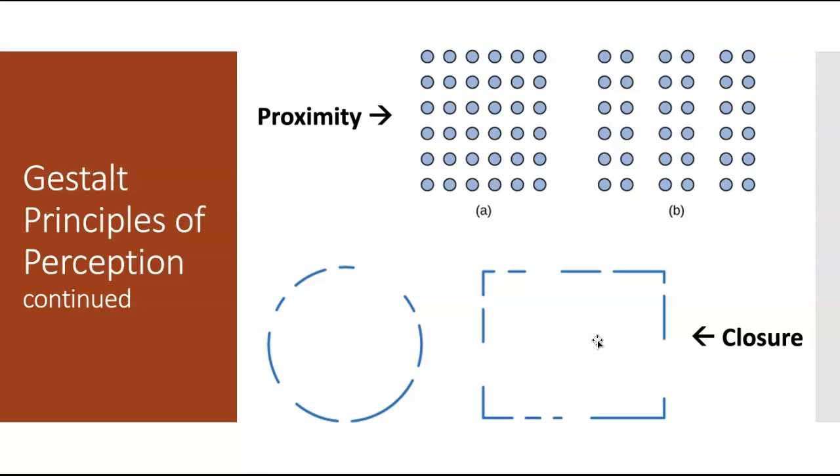A real life example would be the Apple symbol, the Mac symbol. If you look at it, there's actually that little chunk missing from the apple, and yet you still look at that and see it as a whole apple, despite the fact that there's a part missing.